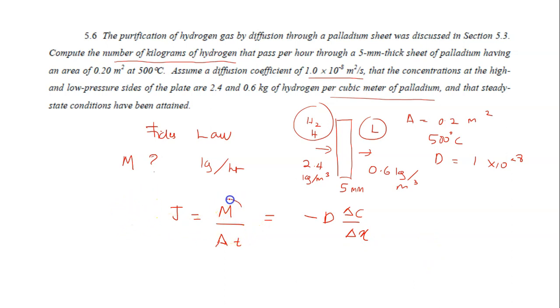In this case, they want you to calculate m, kilogram per hour. What you can do is, this equation here is the same with this equation. So you can summarize this as: m equals to negative D times A times t times Δc over Δx, in which you bring these two to this side. This leaves you with only a single m at the left-hand side. So this is the equation that you will be working with.